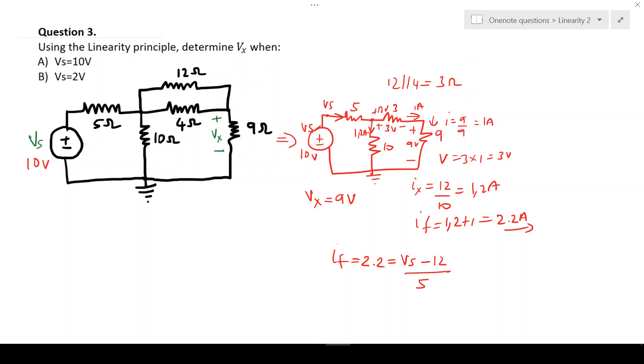So then I can calculate Vs, which will be 5 times 2.2, which gives me 11, plus 12. And that then gives us a Vs value that is equal to 23 volts.